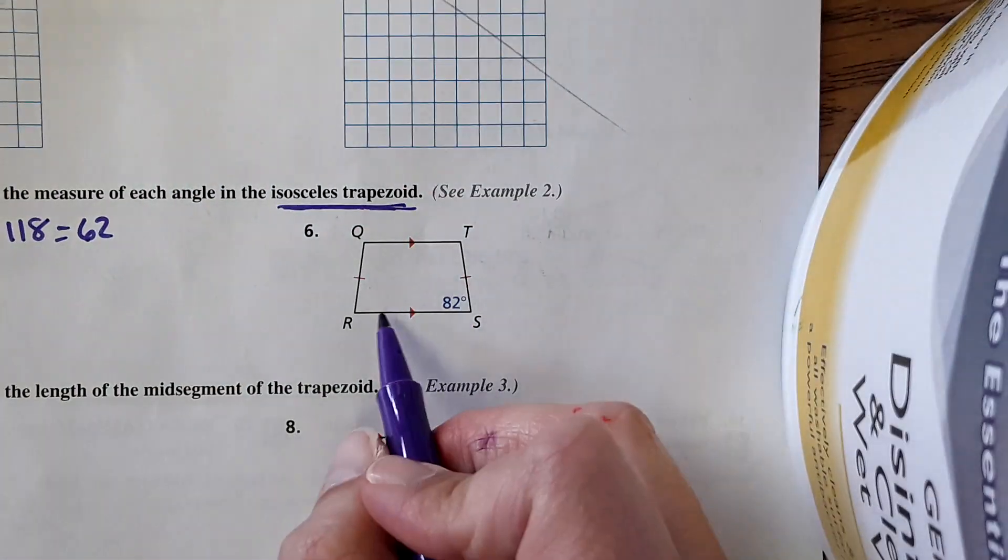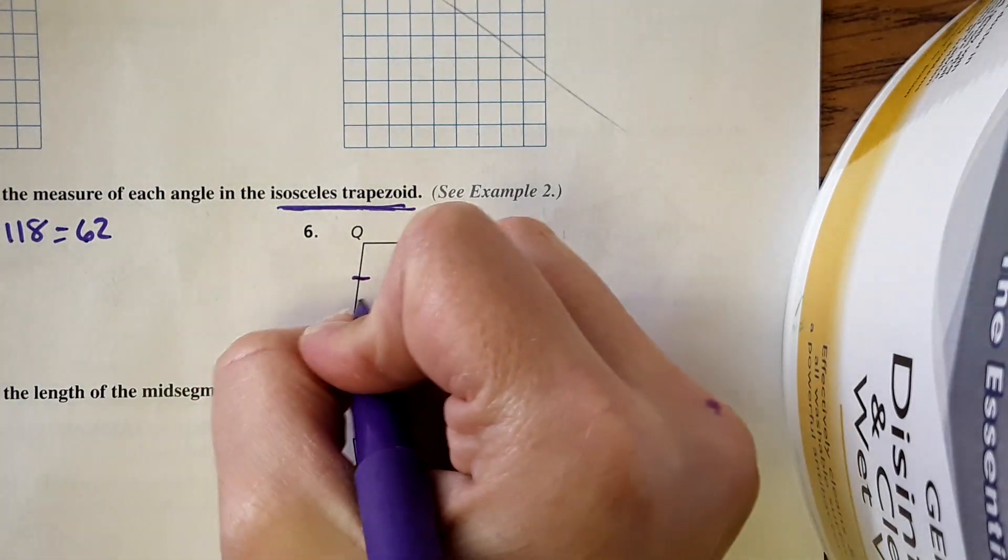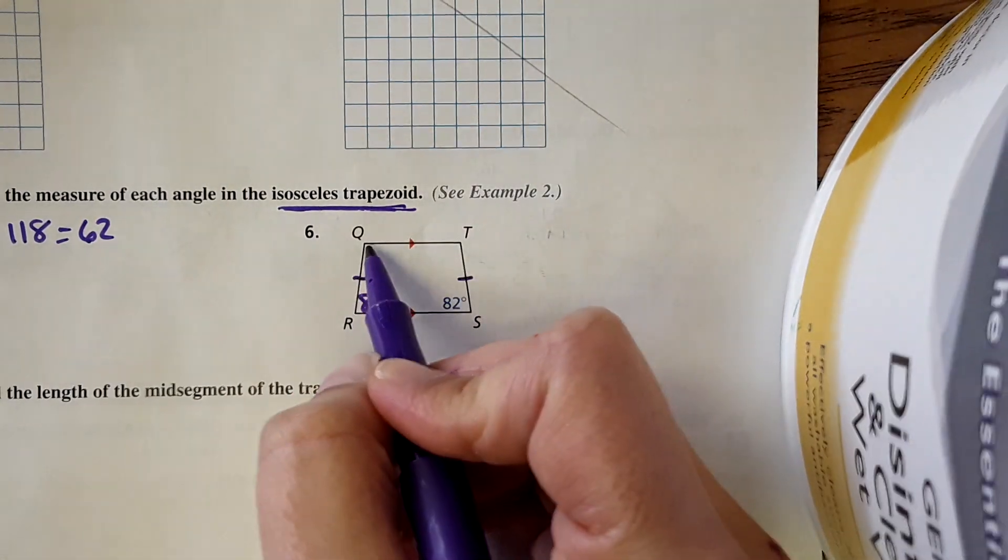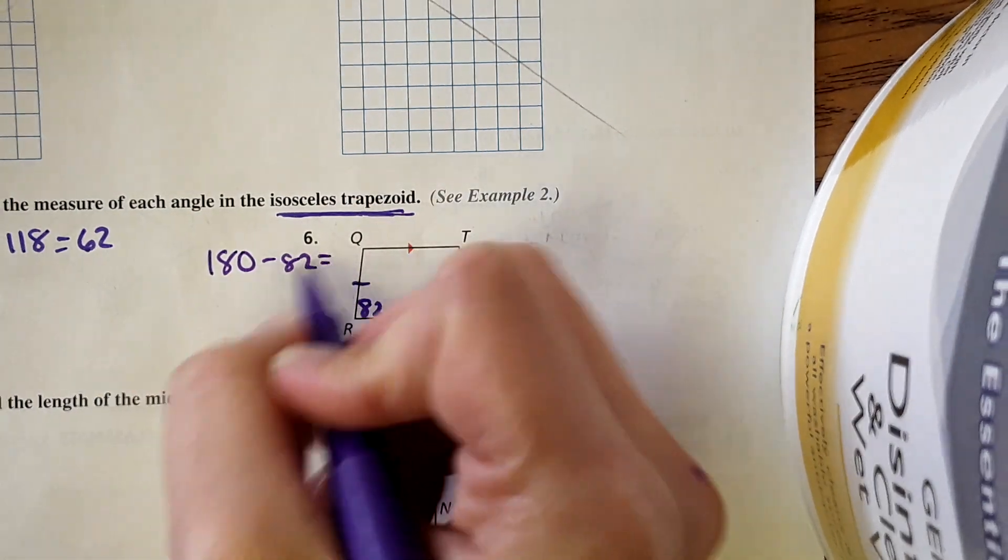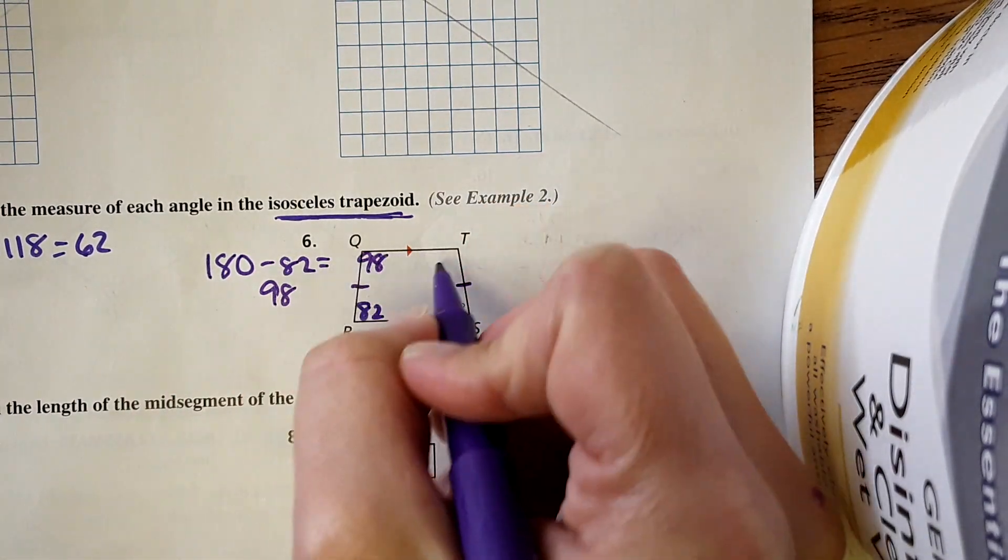Okay, moving on to the next question. Number six, same idea. It's isosceles, so our base angles are the same. This would be 82, and then this would be supplementary to the 82. 180 minus 82 equals 98 and 98.